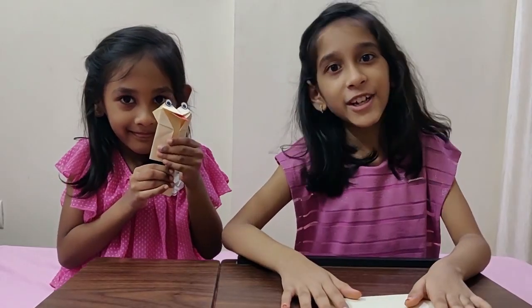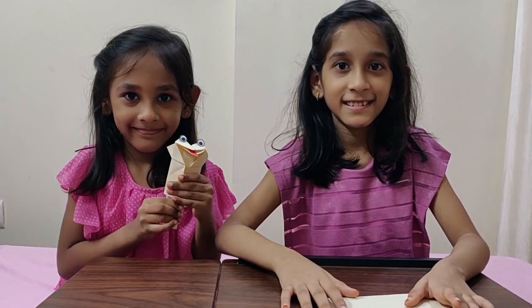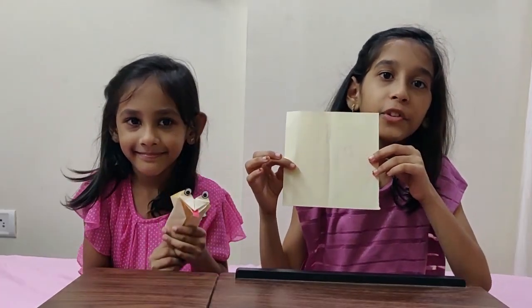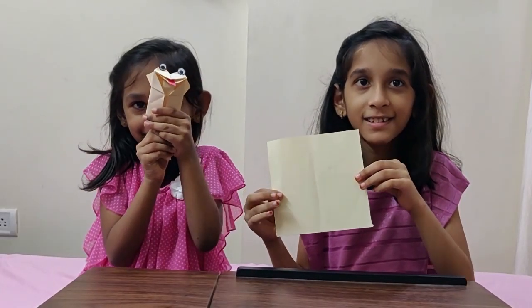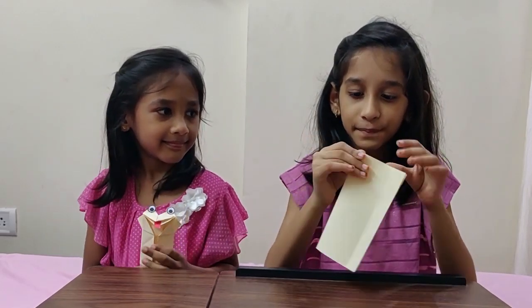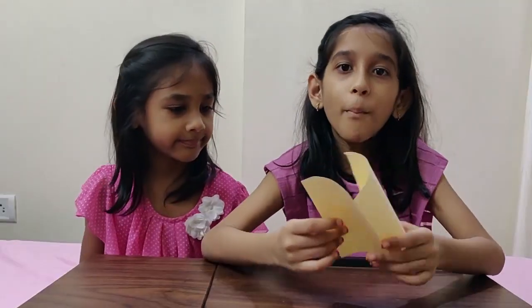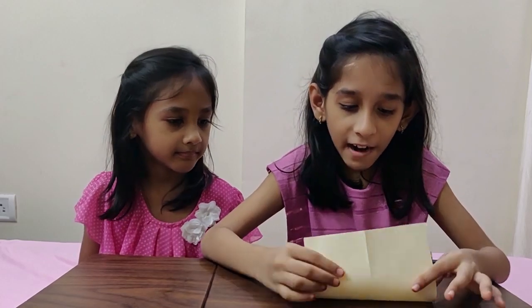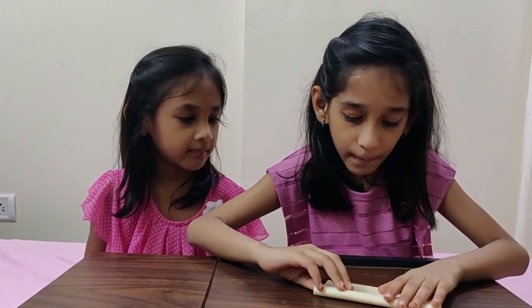Now let's make a crazy frog. Take a paper 15 by 15 cm and fold it into half. Open it and fold it into half. Open it and fold it into half in other way to make a plus side.